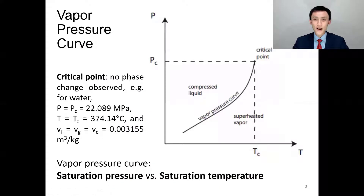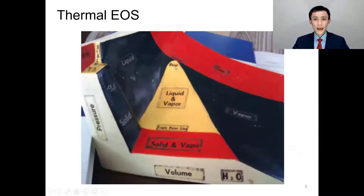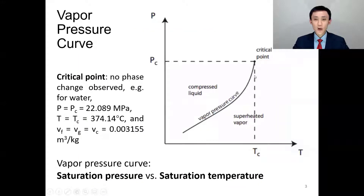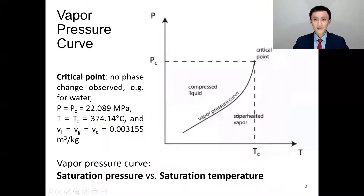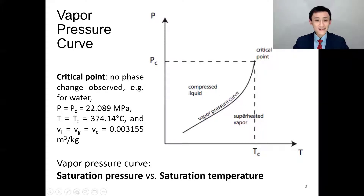This is how the vapor pressure curve comes from. If a point is on the curve, it's going to be saturated. If it's above the curve, it's compressed liquid. If it's below the curve, it's superheated vapor. So: on the curve = saturated, above the curve = liquid, below the curve = gas.